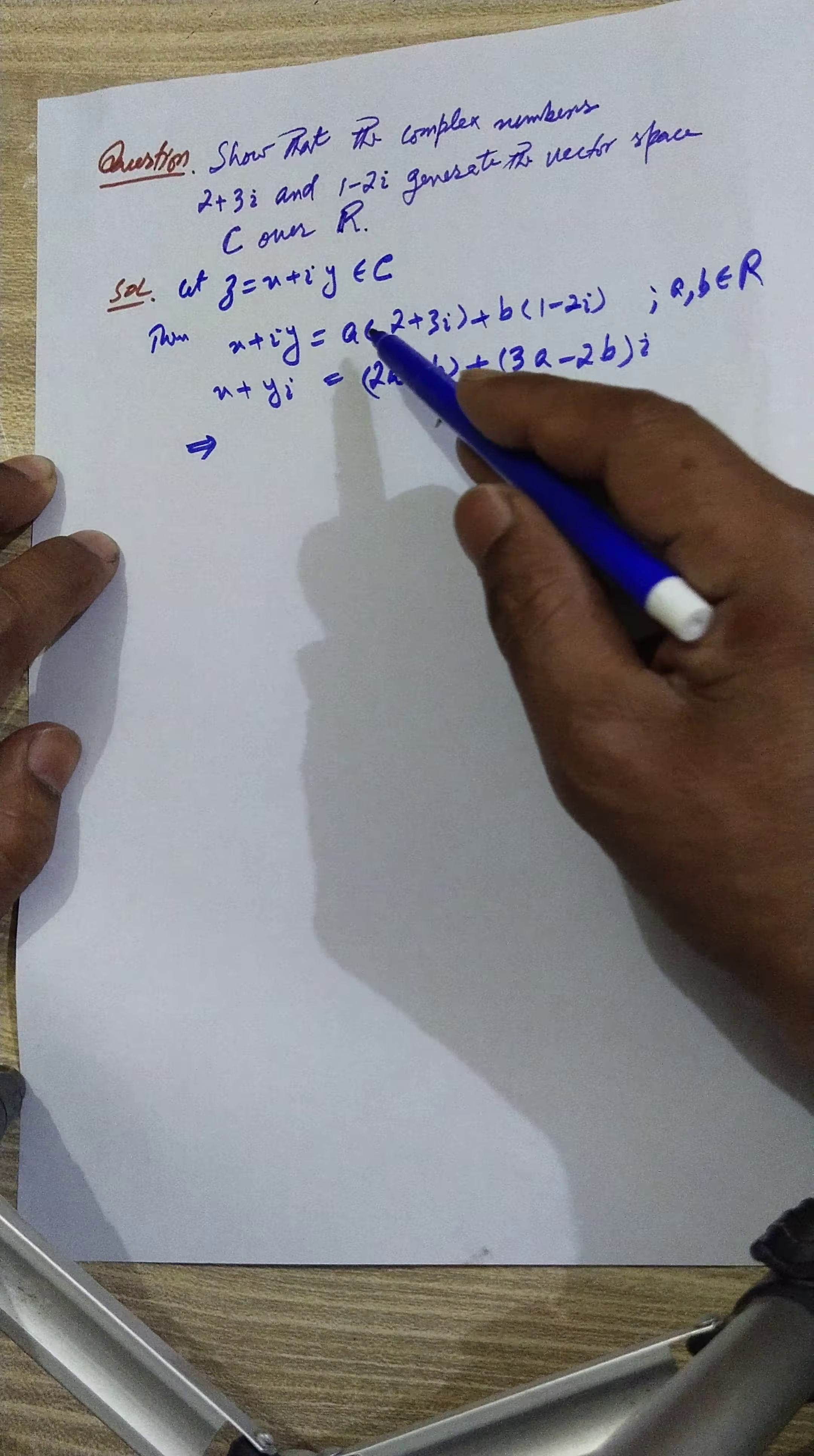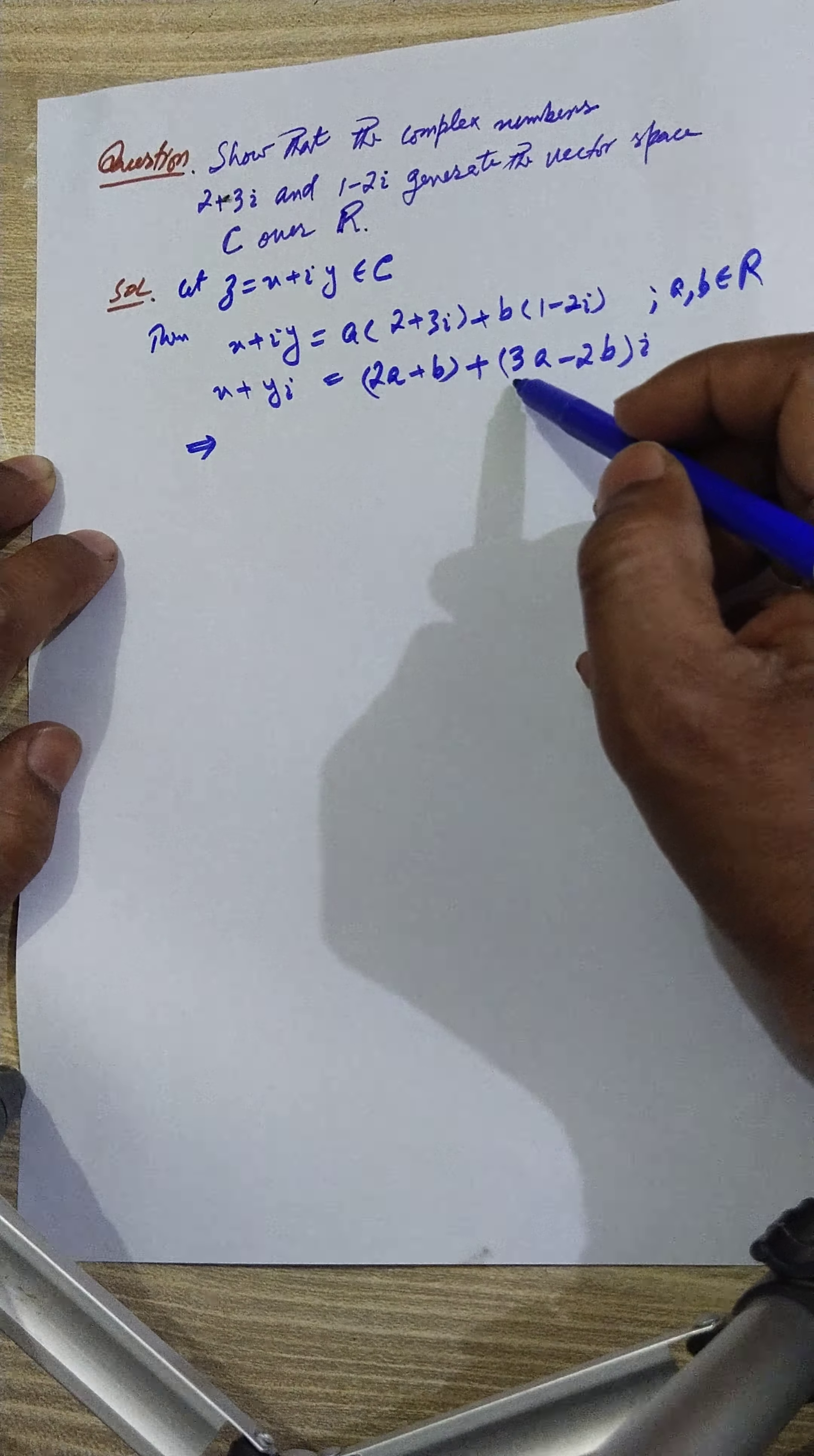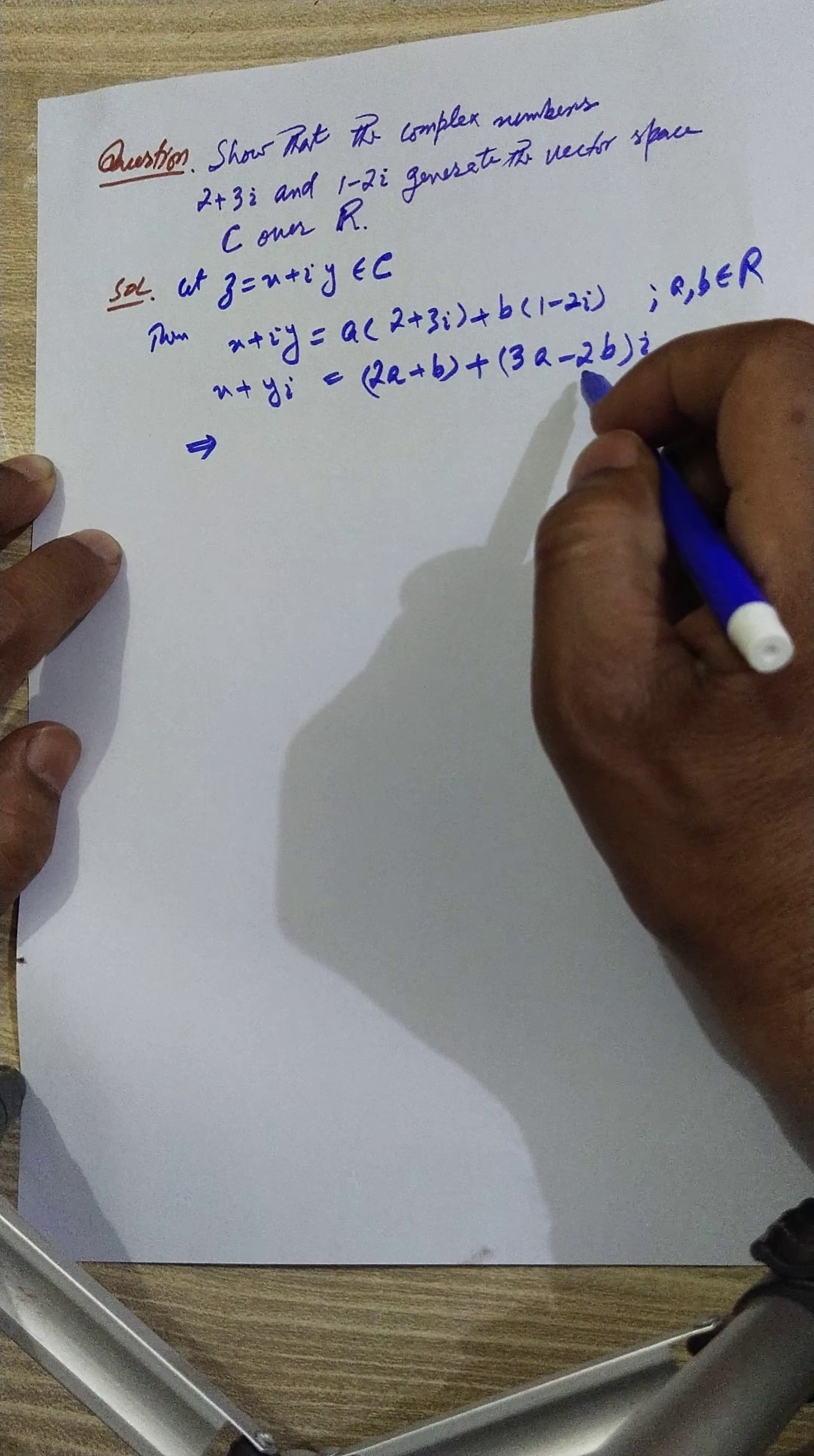When we multiply a with this, it becomes 2a plus 3ai, and plus b times this gives b minus 2bi. Taking i common from the imaginary parts, we have 2a+b plus i(3a-2b).